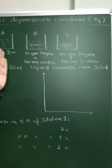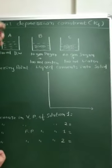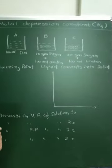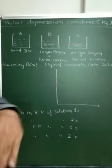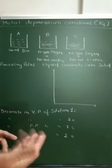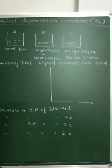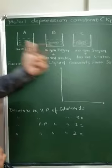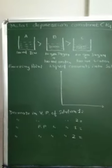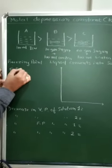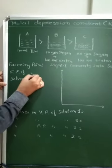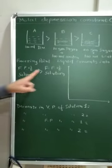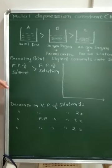The question arises: which beaker will take more time to convert into ice? The answer is beaker C, because it has 20 grams of sugar — more sugar is mixed in — that's why beaker C takes more time to convert into ice. So the freezing point of beaker C is lower, meaning the freezing point of the solvent is higher than the freezing point of the solution.